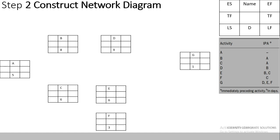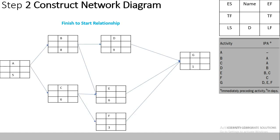You can see that Activity D is preceded by Activity B, Activity B and C are preceded by Activity A, and Activity E is preceded by both B and C. We connect these activities using finish-to-start relationships, which show the logical relationship between activities. Activity A has two successors: B and C. Activity B has two successors: D and E. Activity C has two successors: E and F. Activity G has three predecessors: D, E, and F.